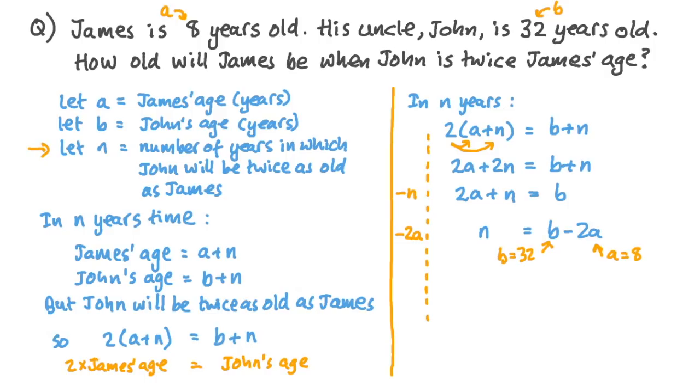But we know that James was 8 to start off with, so A is equal to 8. And we know that John was 32 to start off with, so B is 32. So let's substitute those numbers into this equation. That gives us N is equal to 32 minus 2 times 8. And 2 times 8 is 16, so N is 32 minus 16. And 32 minus 16 is just 16, so N is 16. It'll be 16 years' time when James is half of John's age. And that means James will be 8 plus 16, so that's 24 years old at that time.